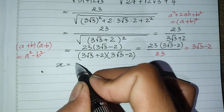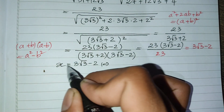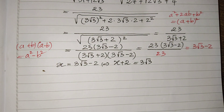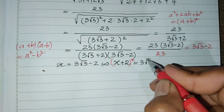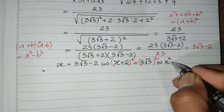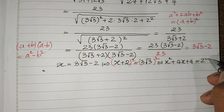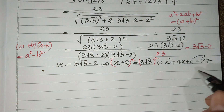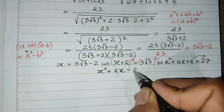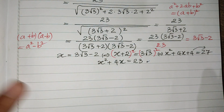Now from h equals 3 square root 3 minus 2, I move 2 to the left side to get h plus 2 equals 3 square root 3. Squaring both sides gives h plus 2 squared equals 27, which expands to h squared plus 4h plus 4 equals 27. Moving 4 to the right side gives us the key relation: h squared plus 4h equals 23.